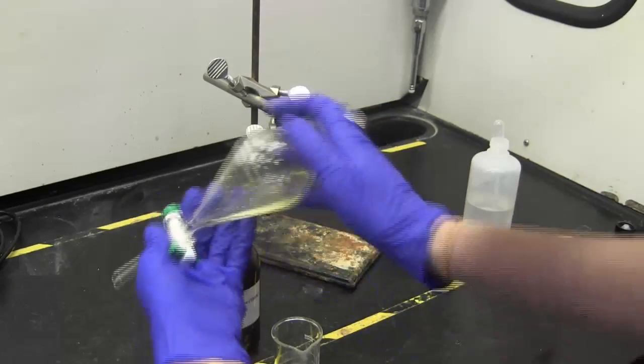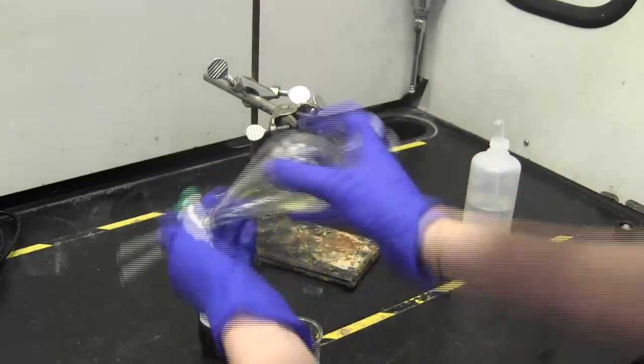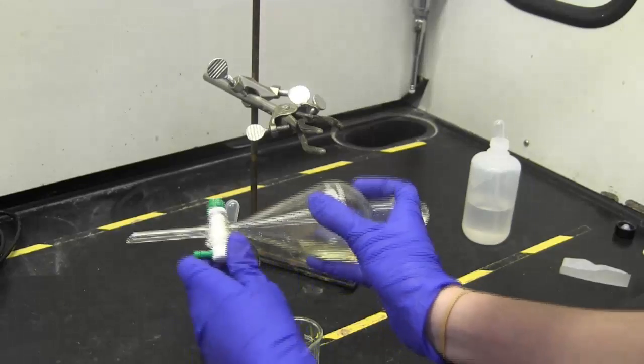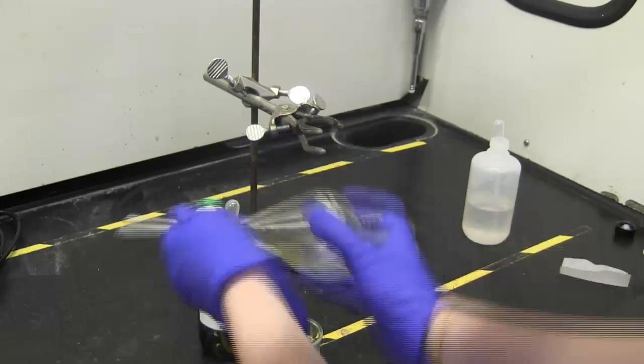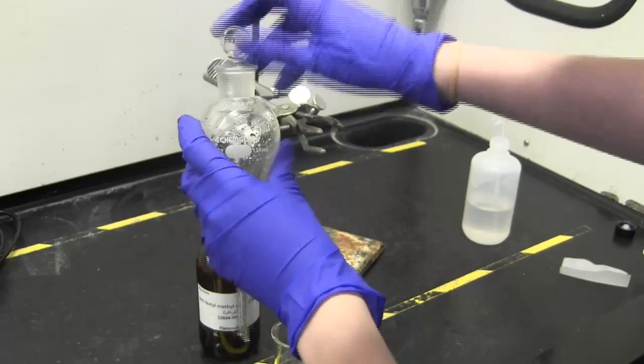Also, be sure to hold the cap in place. Then gently rock the funnel while holding it with both hands to thoroughly mix the layers. After shaking, hold it upside down and open the stopcock to vent out some of the vapors in the funnel. Repeat this three times.